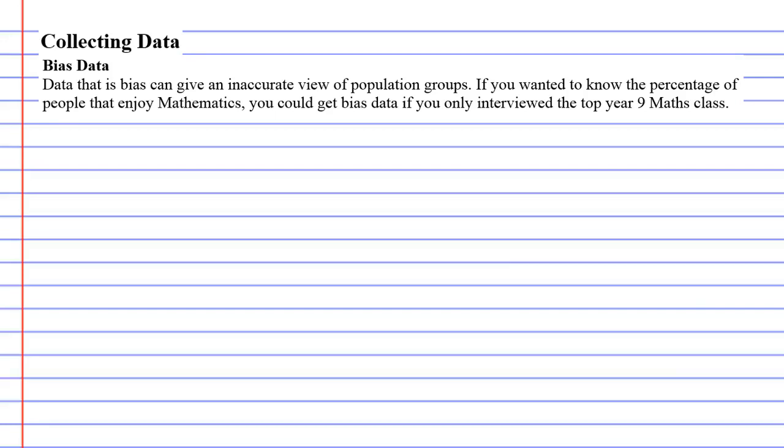Collecting data. Now we're going to talk about biased data, and biased data can give an inaccurate view of population groups. This usually happens when you interview the wrong people or gather data from a very small group of people.